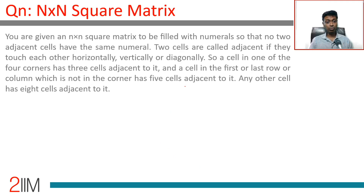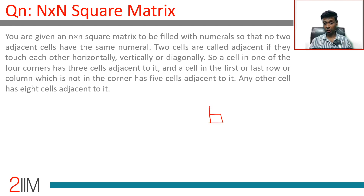You're given an n×n square matrix to be filled with numerals so that no two adjacent cells have the same numeral. Two cells are called adjacent if they touch each other horizontally, vertically, or diagonally — meaning they share a side or a vertex in common.